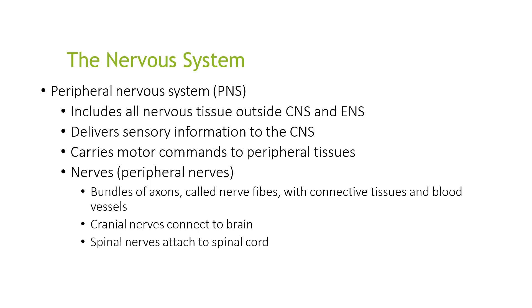The peripheral nervous system includes all nervous tissue outside the central nervous system and the internal nervous system. It delivers sensory information to the central nervous system and carries motor commands to the peripheral tissues. The nerves are known as peripheral nerves — a bundle of axons called nerve fibers with connective tissues and blood vessels. The cranial nerves connect to the brain and spinal nerves attach to the spinal cord.